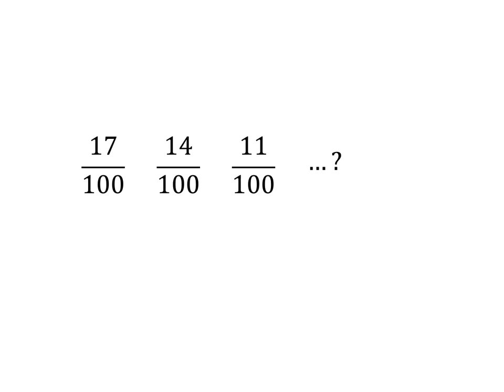First, we need to find the pattern by looking at the numbers we have. To go from 17 over 100 to 14 over 100, we need to subtract 3 over 100.